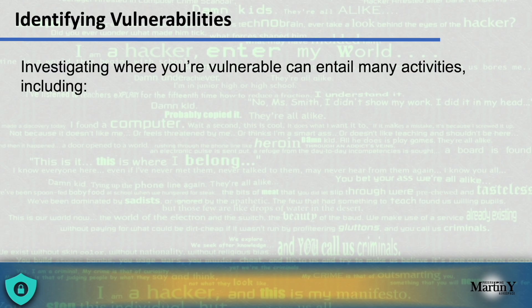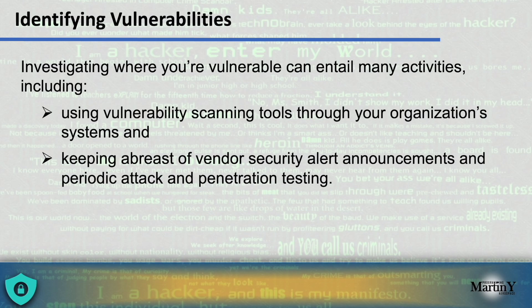Employees overseeing the vulnerability management program should be trained on all automated tools and methods to identify new vulnerabilities. They should also be responsible for the proper handling of vulnerabilities disclosed to your organization by third parties. To identify those vulnerabilities, you can use vulnerability scanning tools in your organizational systems, and keep abreast of vendor security alerts — responsible for announcements and periodic attacks or even penetration testing into your organization. It's always a good idea to test your systems for vulnerabilities yourself before someone else does. There is no one-size-fits-all approach, as so much depends on your particular technical configuration and organization size.